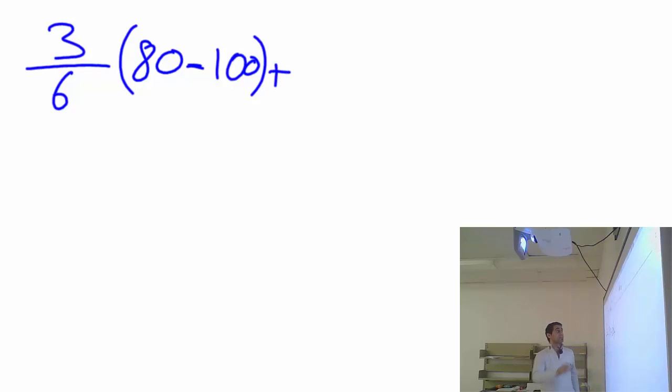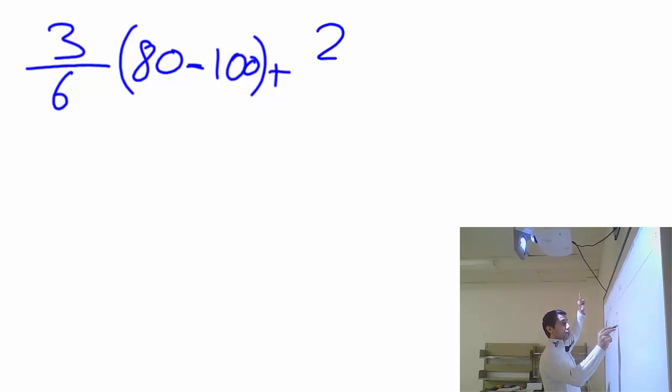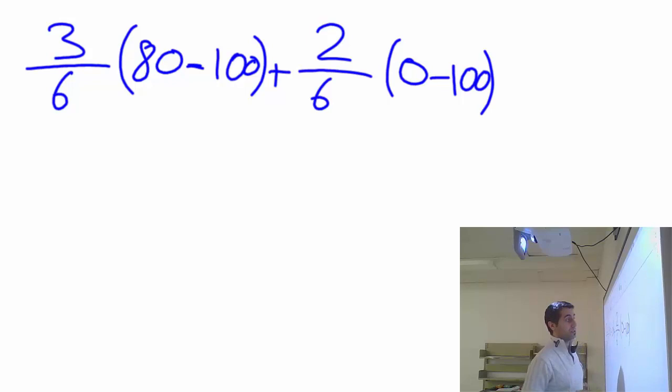The next possible outcome is four or five — when you get four or five, you get nothing. In mathematical expectation form: two options out of six, open bracket, win money is zero, minus the money you bet, which is one hundred. Keep that, then plus the last option.